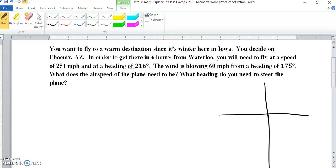We're going to do the extra practice problem for the smart pilot. It seemed to be the one that gave people quite a bit of trouble on the CFA. So let's get started. It says you want to fly to a warm destination from Iowa since it's so cold. So you decide on Phoenix, Arizona.